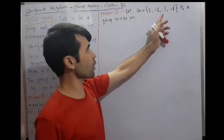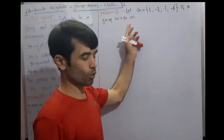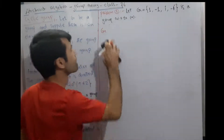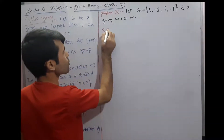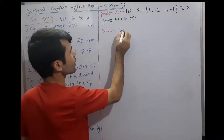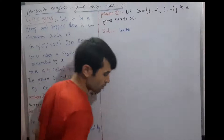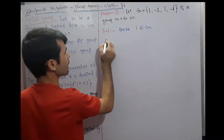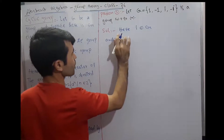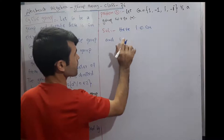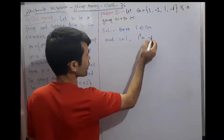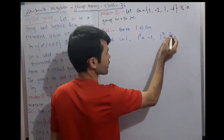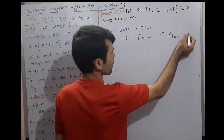Another example: let G = {1, -1, i, -i} be a group with respect to multiplication. We now show that this group is cyclic. Solution: i belongs to G. We compute: i^1 = i, i^2 = -1, i^3 = i^2 · i = (-1)(i) = -i, and i^4 = 1.